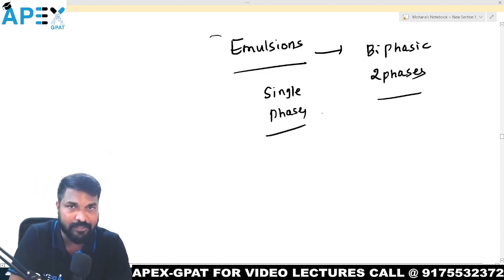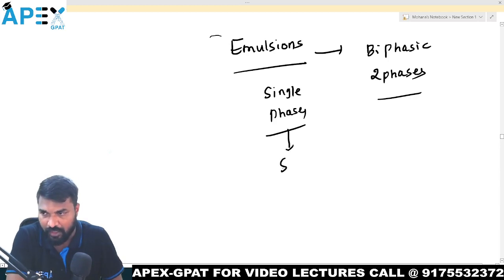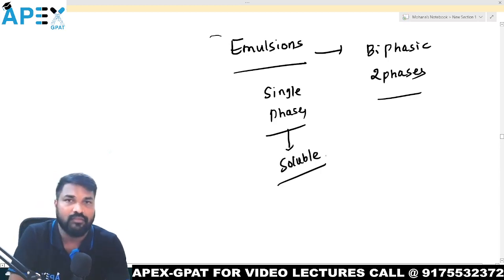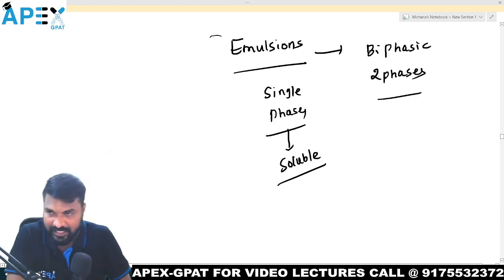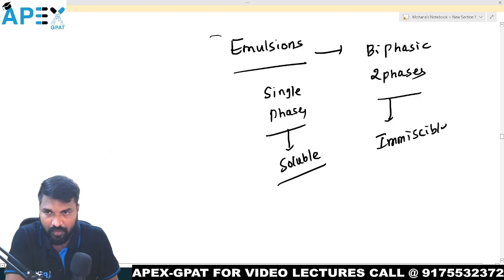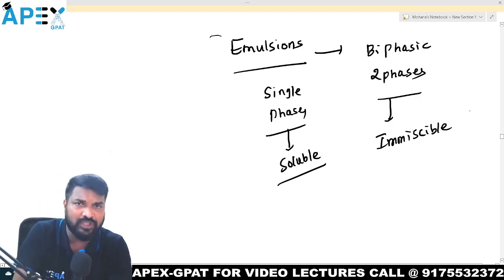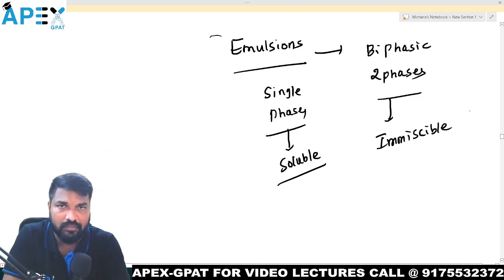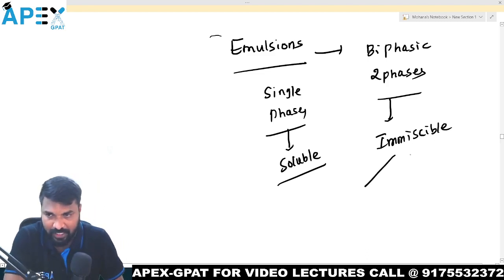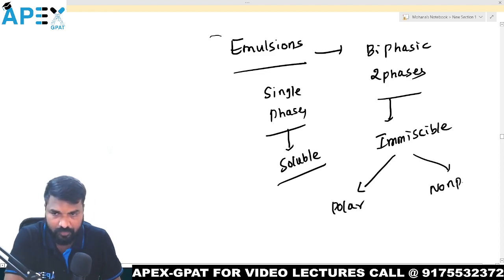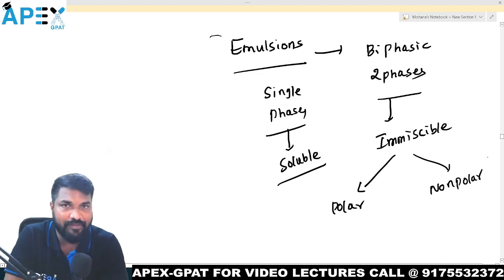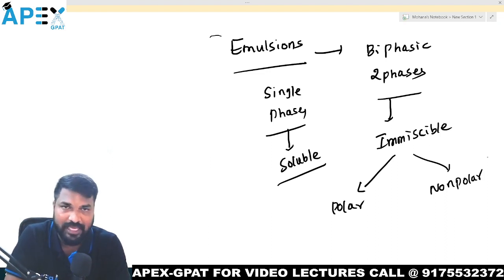Single phase means they are soluble. When you say two phases, they are immiscible. When will two things be immiscible? When we have polar and non-polar solvents, then they become immiscible.